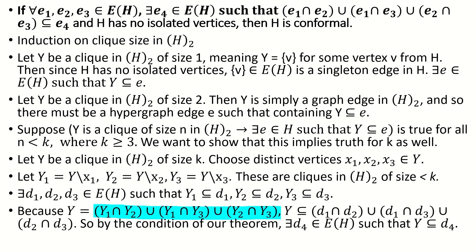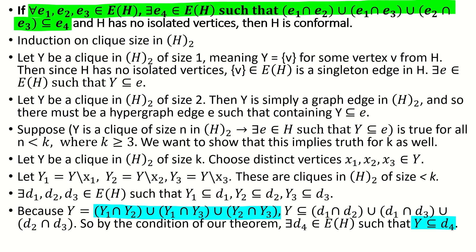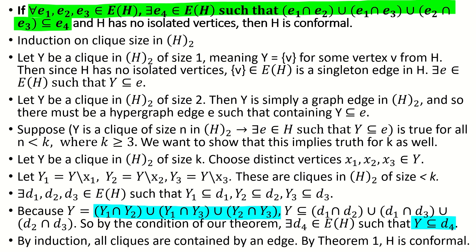It's straightforward to verify that y is the union of the pairwise intersections between y1, y2, and y3. From this, we can conclude that y is a subset of the union of pairwise intersections between d1, d2, and d3 — the hypergraph edges that by the inductive hypothesis contain y1, y2, and y3. Applying our theorem's condition, the union of the pairwise intersections of d1, d2, and d3 is contained by some edge d4. Since clique y is a subset of this union of intersections, clique y is also contained in d4. Therefore, for a hypergraph without isolated vertices that satisfies our theorem's condition, cliques of any size must be contained by some edge, and by theorem 1 this is equivalent to being conformal.